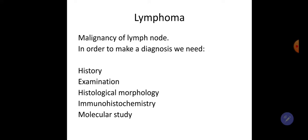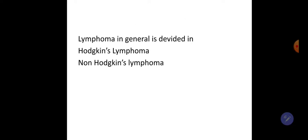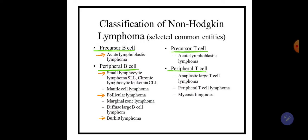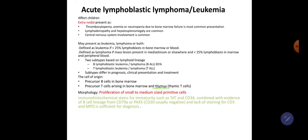Lymphoma is the malignancy of the lymph node. To make a diagnosis, we need history, examination, histological morphology, immunohistochemistry, and molecular study. Lymphoma is broadly divided into Hodgkin lymphoma and non-Hodgkin lymphoma. The classification of non-Hodgkin lymphoma includes four types: precursor B cell, peripheral B cell, precursor T cell, and peripheral T cell. I will discuss precursor B cell — acute lymphoblastic lymphoma — and peripheral B cell types: small lymphocytic lymphoma, chronic lymphocytic leukemia, follicular lymphoma, and Burkitt lymphoma.